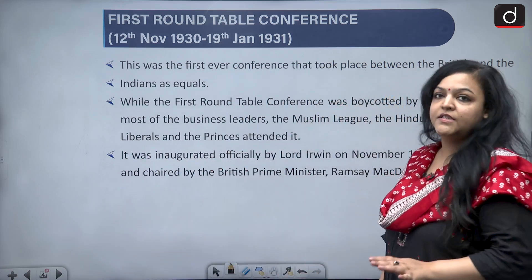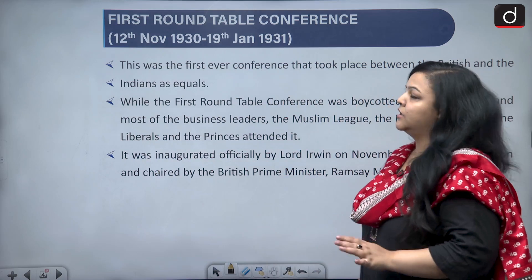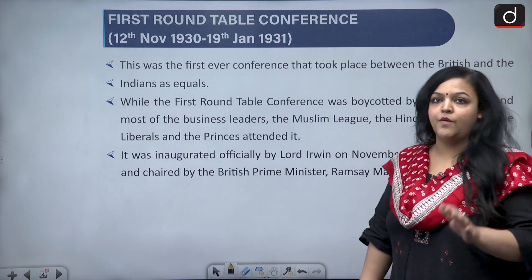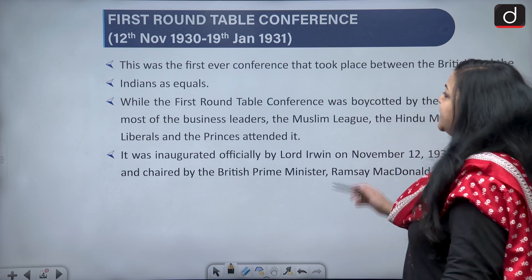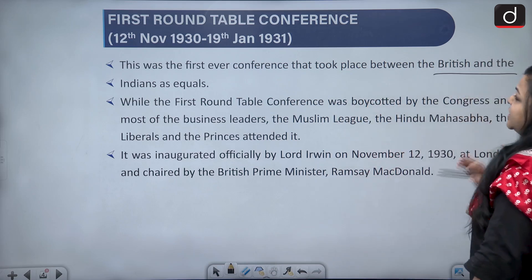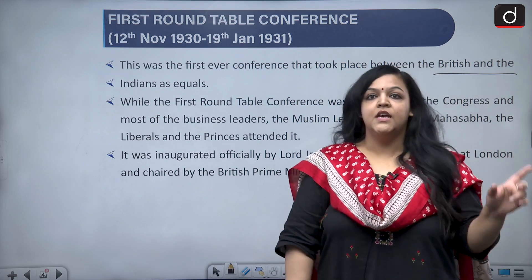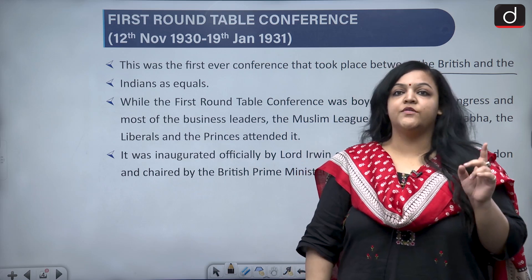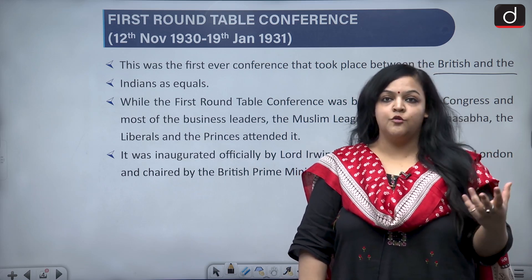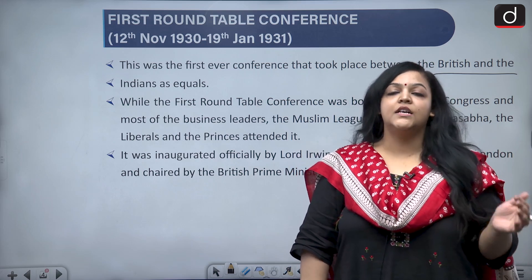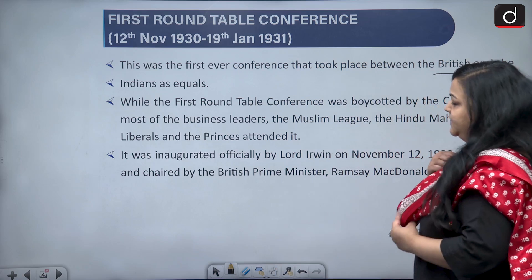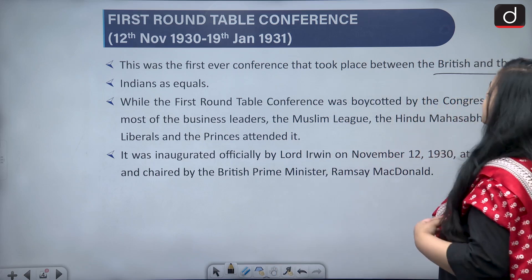The First Round Table Conference happened from November 12, 1930 to January 19, 1931. This was the first ever conference that took place between the British and the Indians as equals. This is why it is important — for the first time the British considered Indians as equals and called them on an equal footing to decide on certain matters.